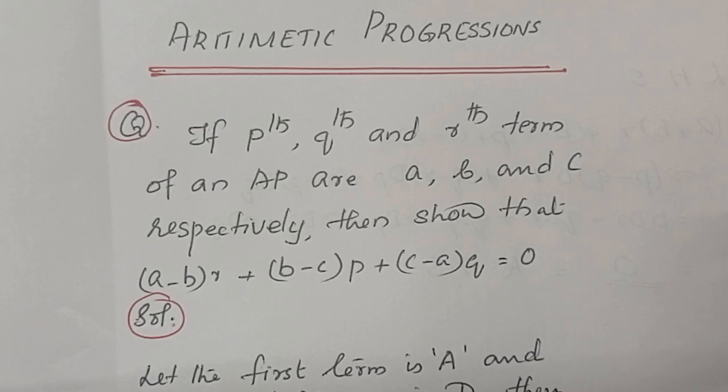Hi viewers, a question related to arithmetic progression. If Pth, Qth and Rth term of an AP are A, B and C respectively, show that (A minus B) into R plus (B minus C) into P plus (C minus A) into Q is equal to 0.